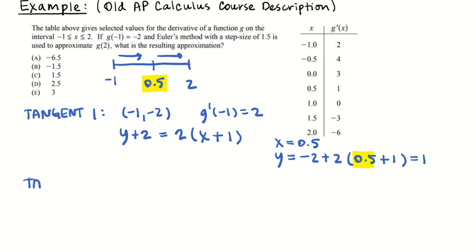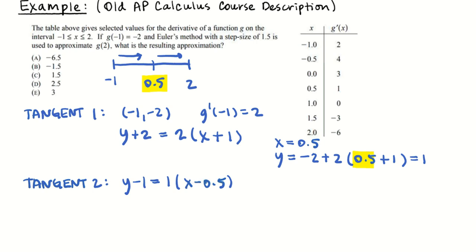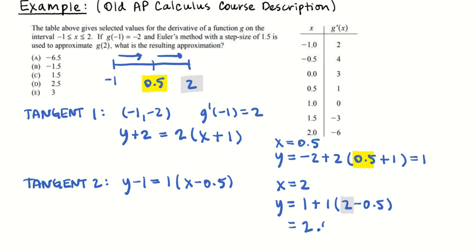So my second tangent line is y minus 1 equals — what's the slope where x equals 0.5? From the table that's 1 — so 1 times (x minus 0.5). I plug in x equals 2 for my second step: y equals positive 1 plus 1 times (2 minus 0.5). That's 2 minus 0.5 equals 1.5, so 1 plus 1.5 is 2.5. And that's answer choice D.